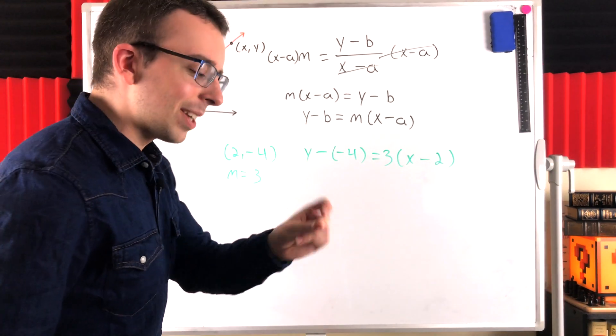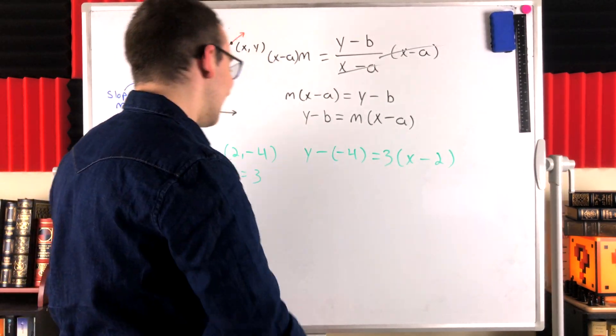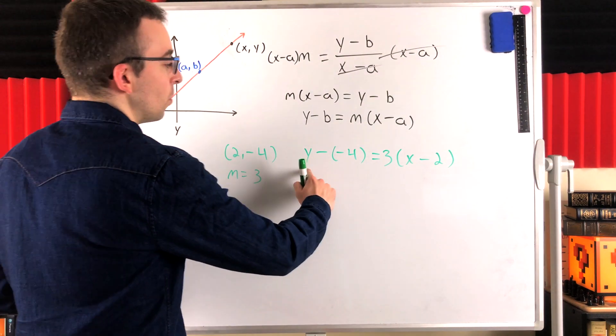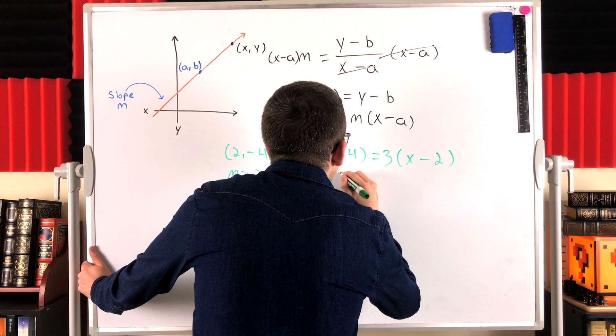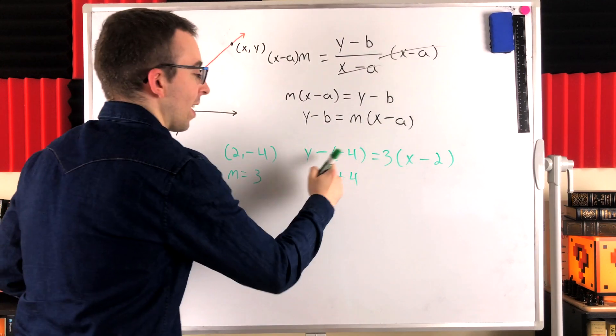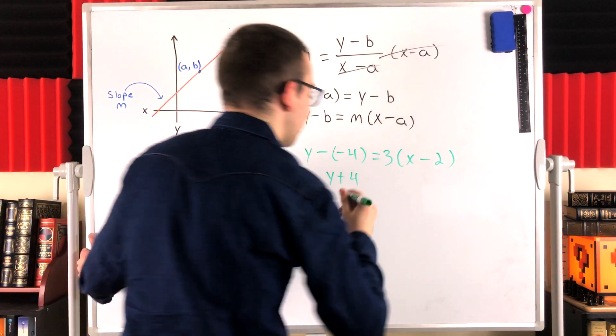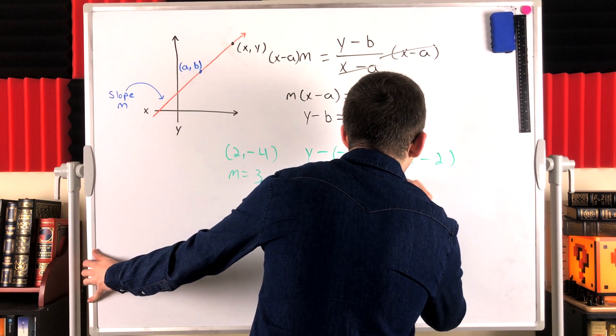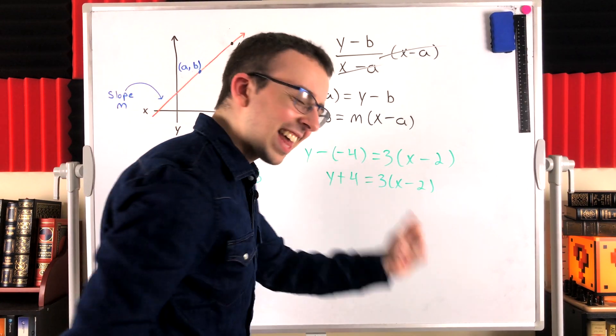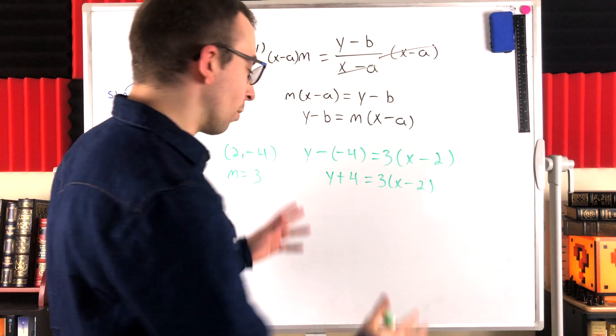Just like that, we've got our equation. If we wanted to, we could rewrite Y minus negative 4 as Y plus 4, since subtracting a negative is the same as adding a positive. So, Y plus 4 is equal to 3(X minus 2). So, just like that, we've got our point-slope form equation of the line. Beautiful.